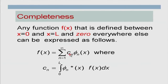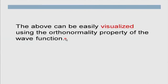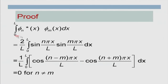This is called the completeness condition — the wave functions turn out to be complete. We can easily verify orthonormality: taking φₙ*φₘ, we write sin(nπx/L)·sin(mπx/L) using the standard trigonometric identity as [cos((n−m)πx/L) − cos((n+m)πx/L)]/2. Integrating from 0 to L, when n ≠ m this gives zero, and when n = m it gives 1 — confirming the orthonormality condition.